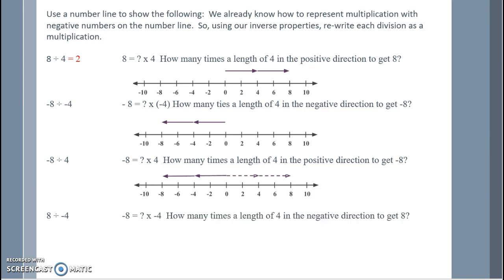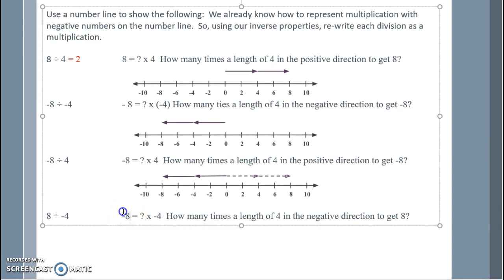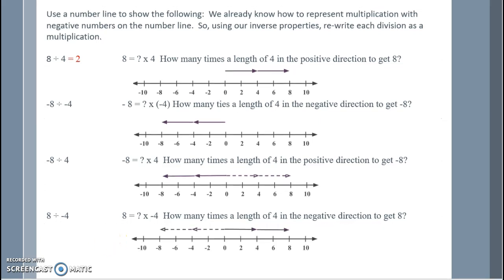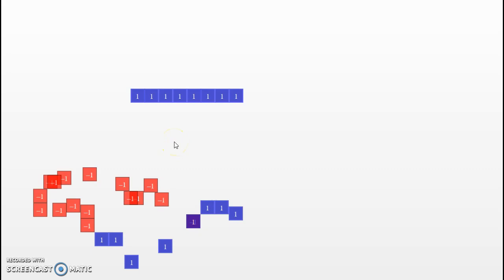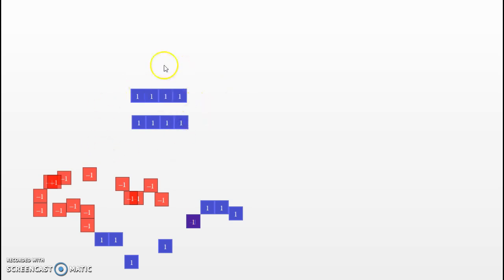And negative 8 divided by negative 4: how many times a length of 4 in the negative direction to get to 8? We would originally think we were going 4 in the negative direction to get to 8, but we need to be in the positive, for a final answer of positive 2. Using chips: we're starting with 8 divided by 4. We want to know how many groups of 4 we can make. How many groups of positive 4 can we make? We can make 2 groups.